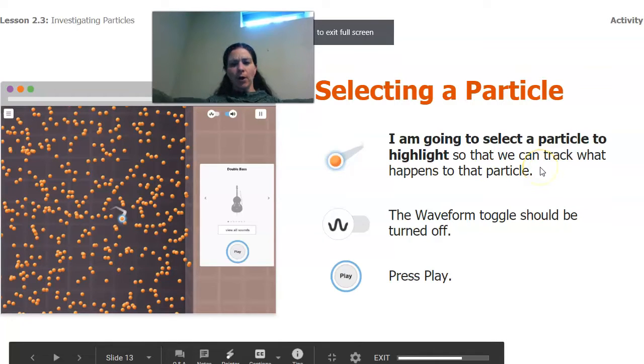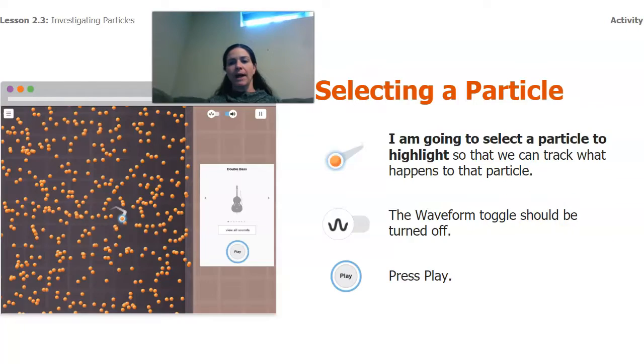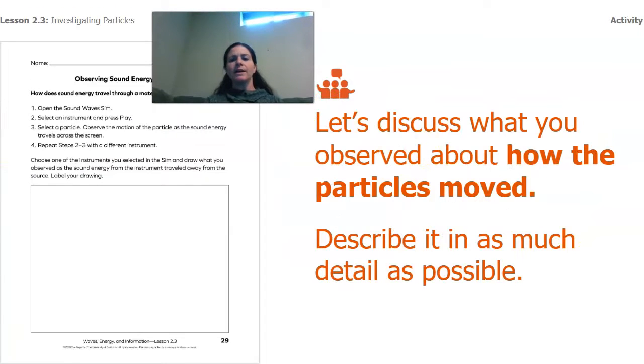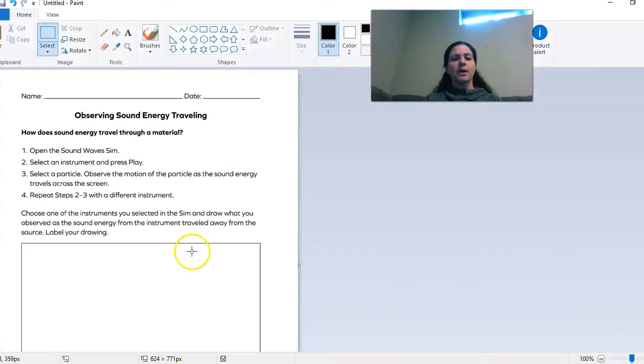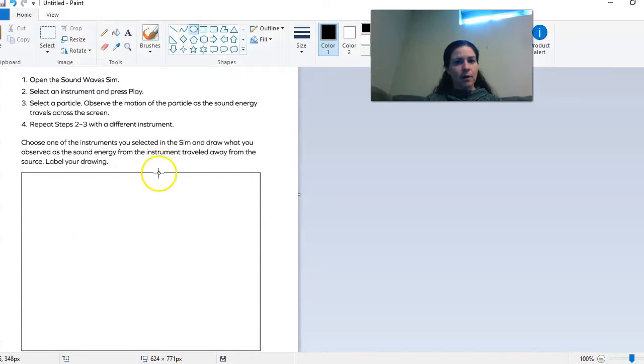So we selected a particle, we turned off the wave, we didn't have the waveform on, we pressed play. Now let's think about what we saw about the particle moving, and we're going to describe it in as much detail as possible.